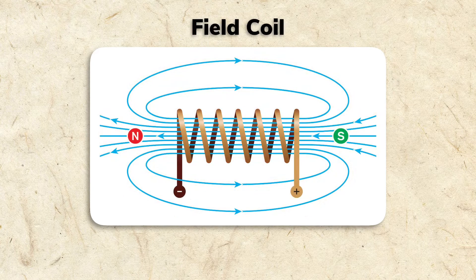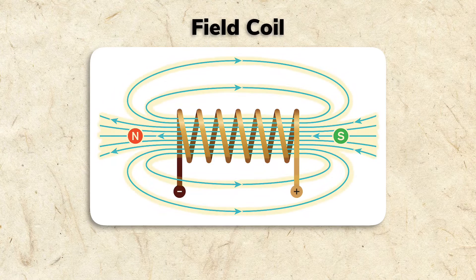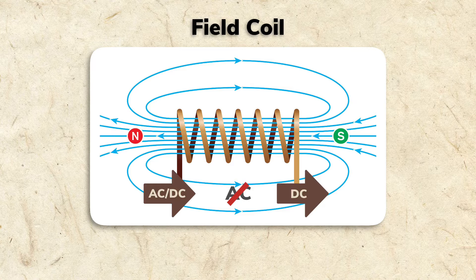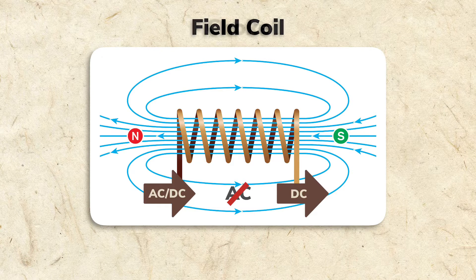The field coil in our radio does two things. It serves as a magnet for the speaker and helps filter AC from our DC power supply. When an inductor is used as a filter, it's called a choke.